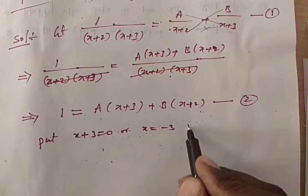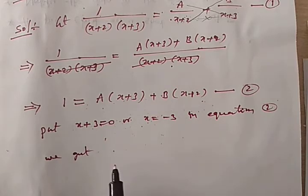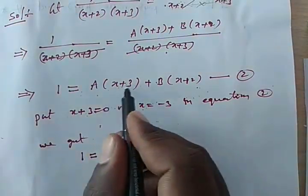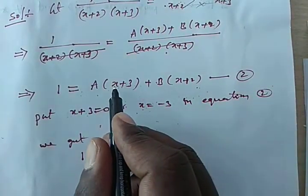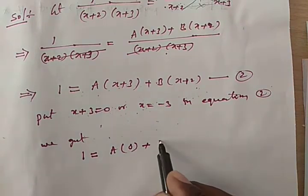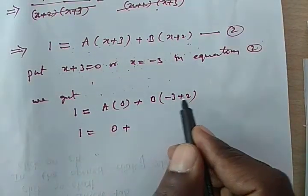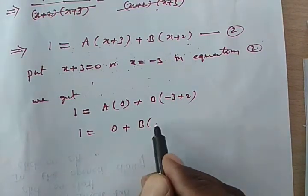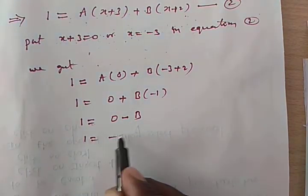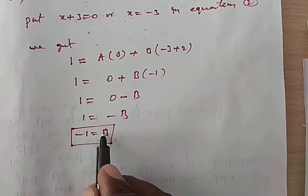Now substitute x = −3 into Equation 2. The left side is 1. On the right side, x+3 becomes 0, so A×0 = 0. For the B term: x+2 = −3+2 = −1, so we get B×(−1). Therefore 1 = 0 + (−B), which gives 1 = −B, so B = −1.